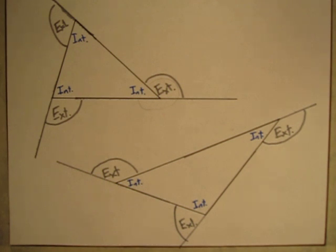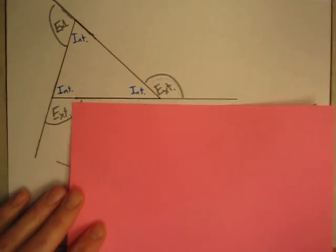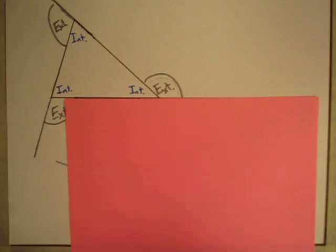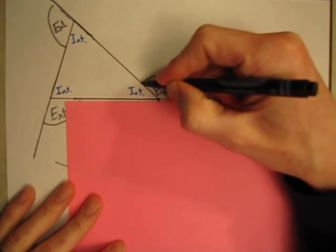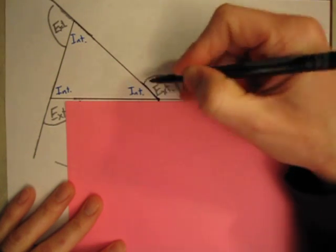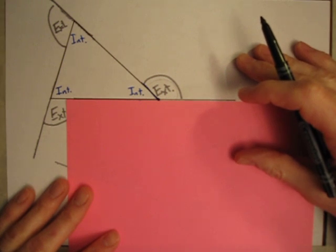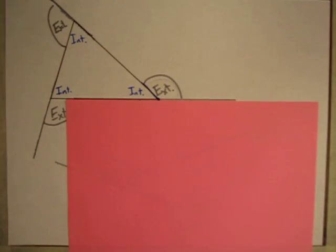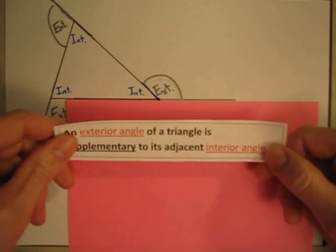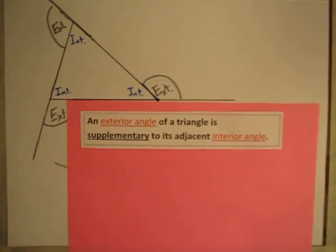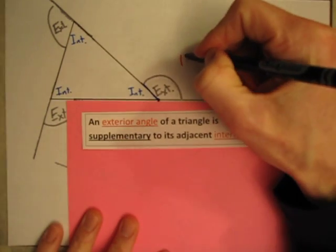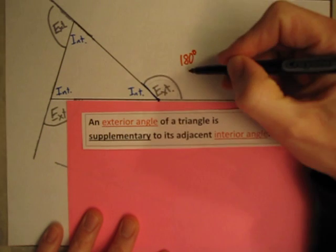Whenever you have interior and exterior angles adjacent, they share a vertex and one common side between them — they are adjacent. These two angles add up to a straight line, so they are supplementary. An exterior angle of a triangle is supplementary to its adjacent interior angle; they add up to 180 degrees.